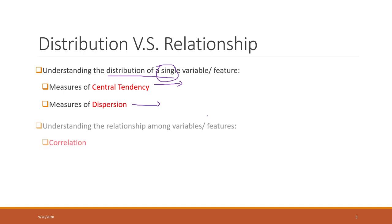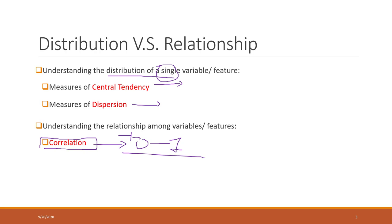If we want to see the relationship among many variables, the simplest approach is to calculate the correlation coefficient, which is a value between negative one and positive one. Of course, we can use other methods to investigate the relationship, like regression models and other advanced statistical tools.